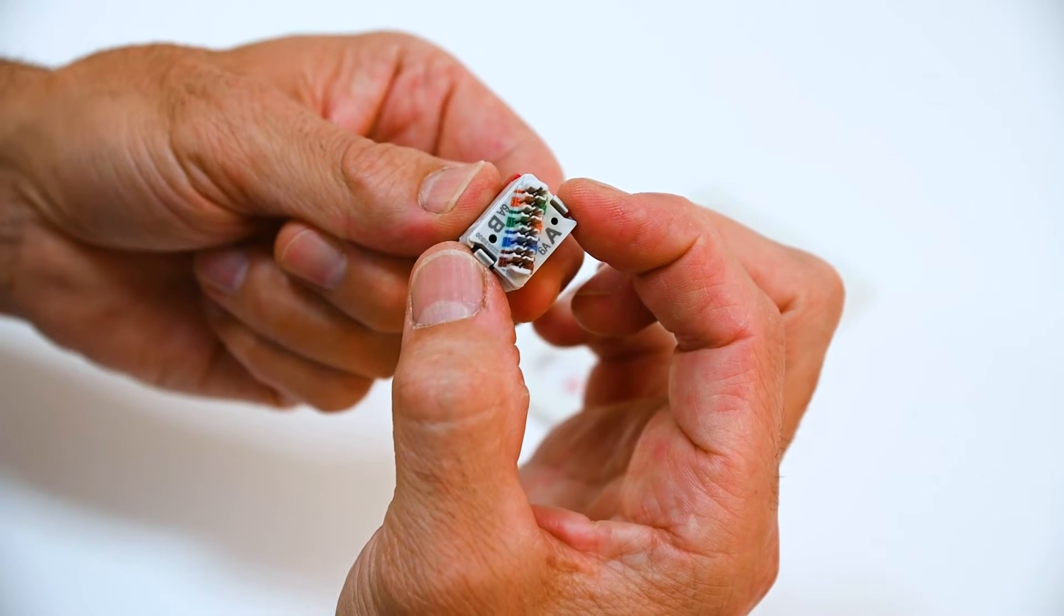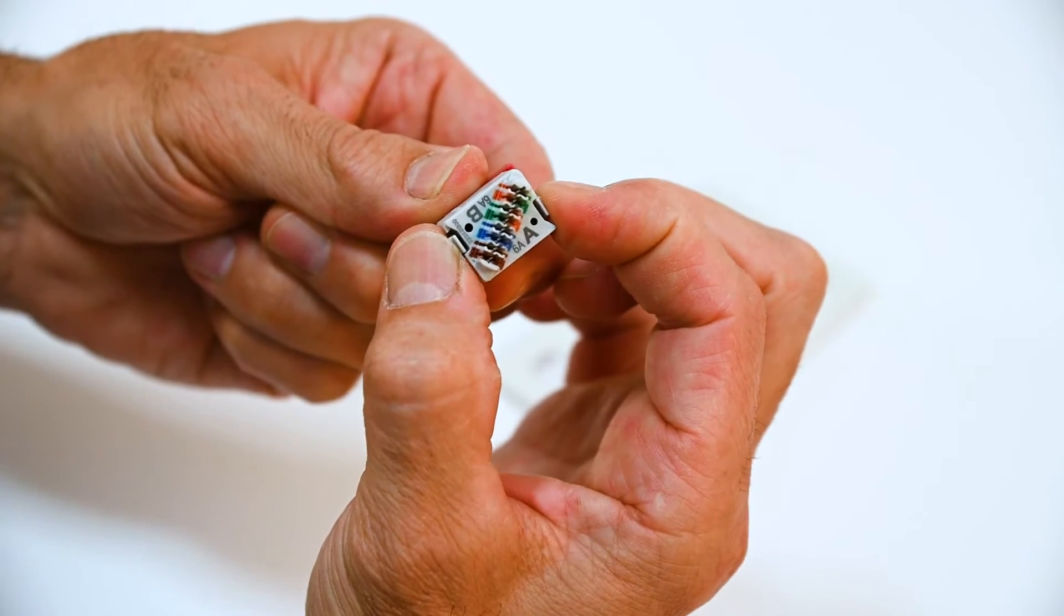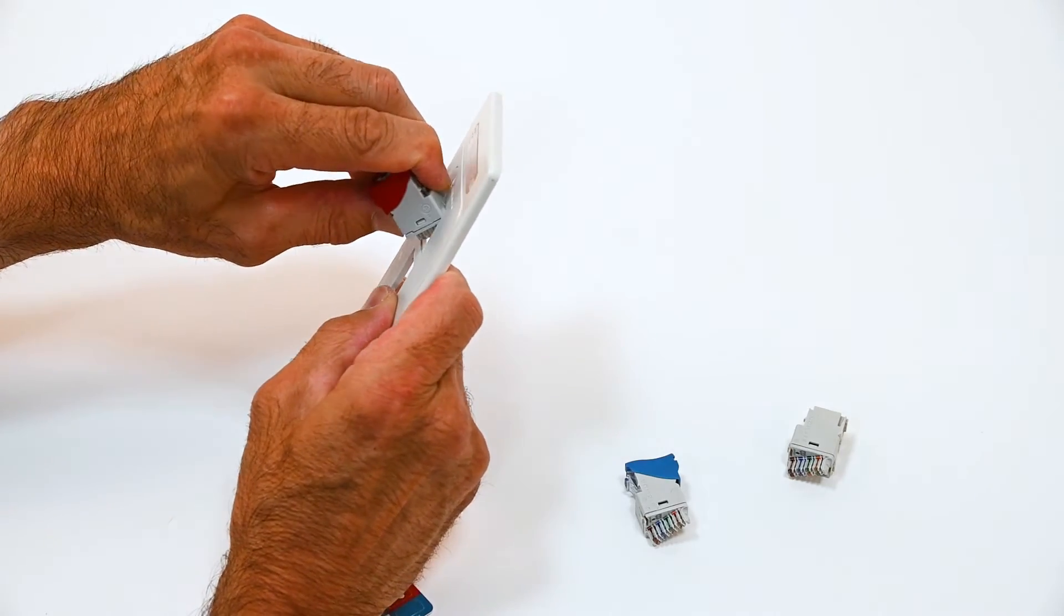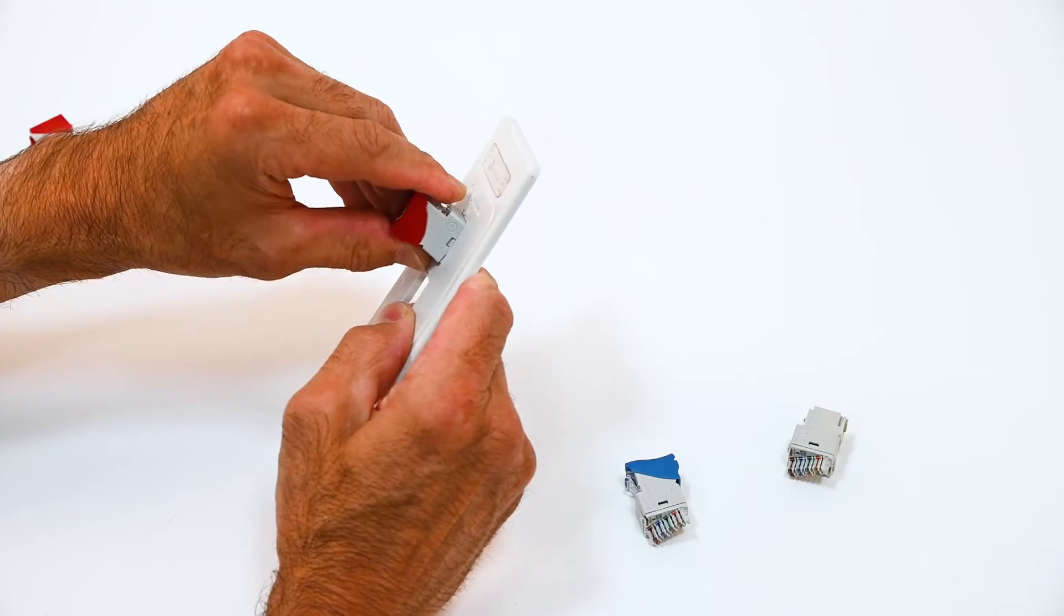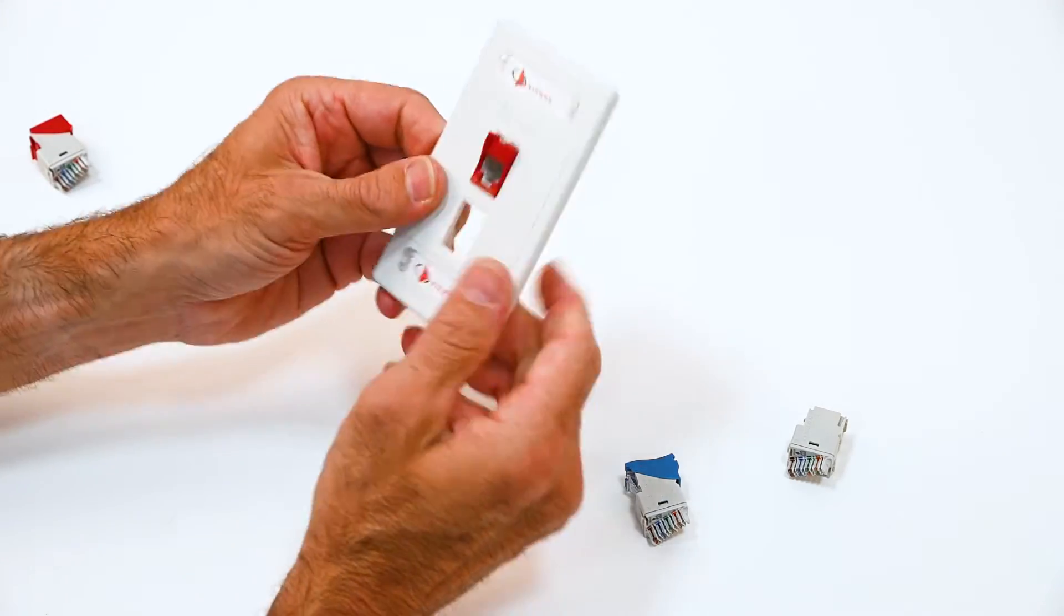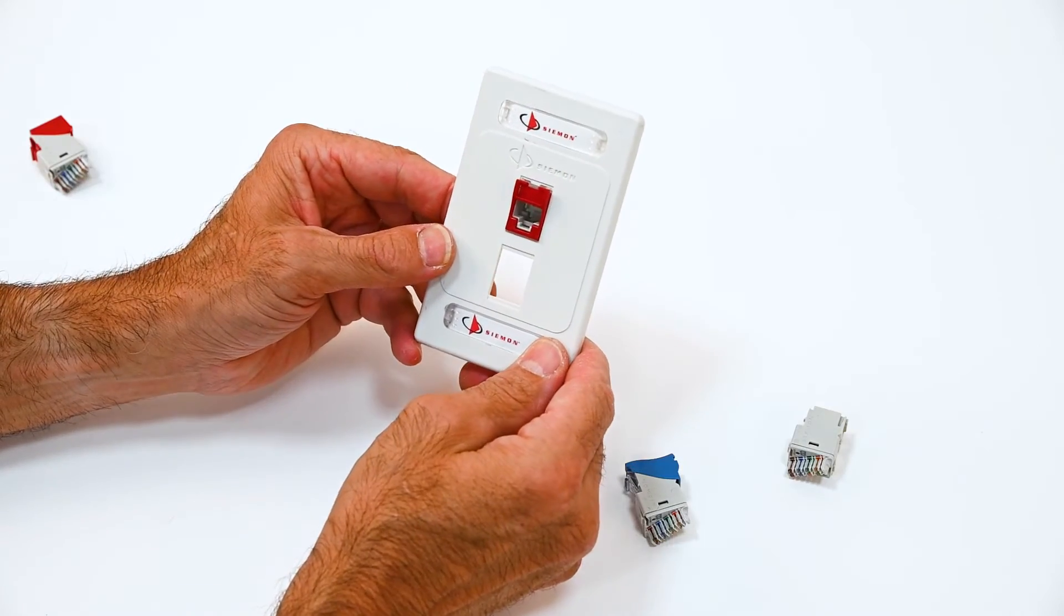When you're mounting this into the patch panel those back latches will lock into the patch panel. Those latches will catch a little bit so you just have to kind of flex those latches so you can bring them in from the front. So these jacks do snap in from the front or the back.